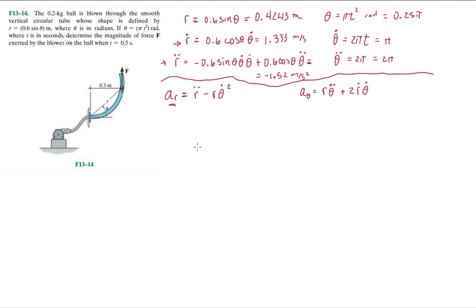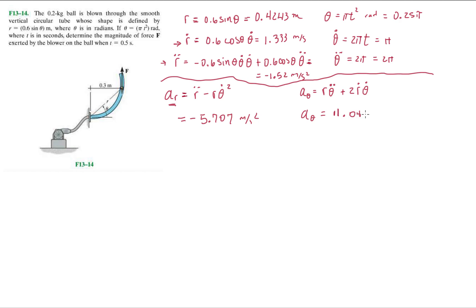Now it's just plug and chug. Plugging those values into our acceleration equations, we get the radial acceleration a_r = −5.707 m/s², and the transverse acceleration a_θ = 11.04 rad/s².